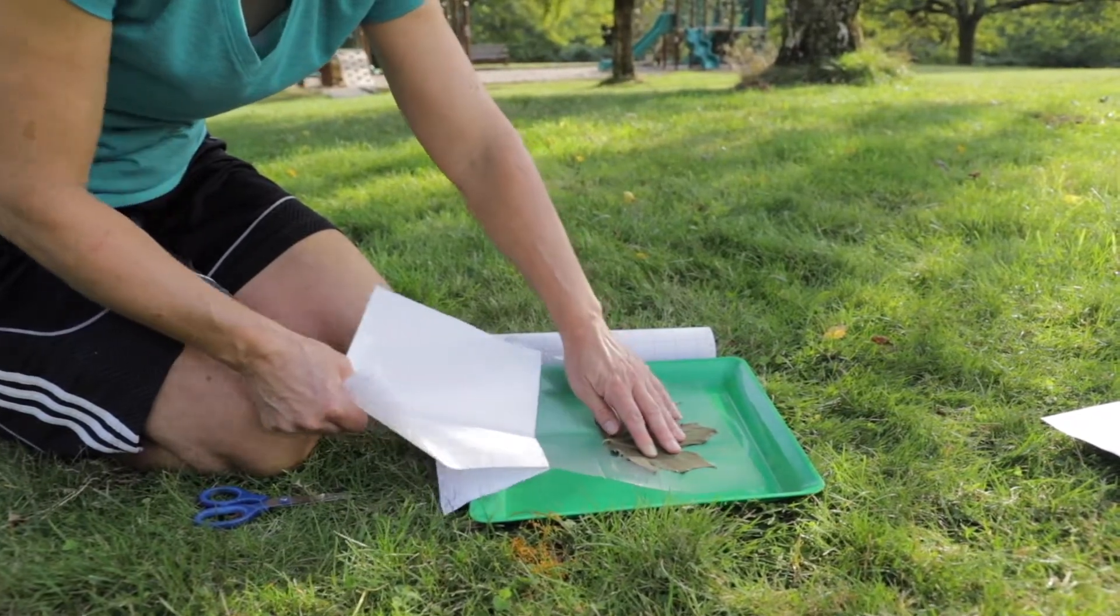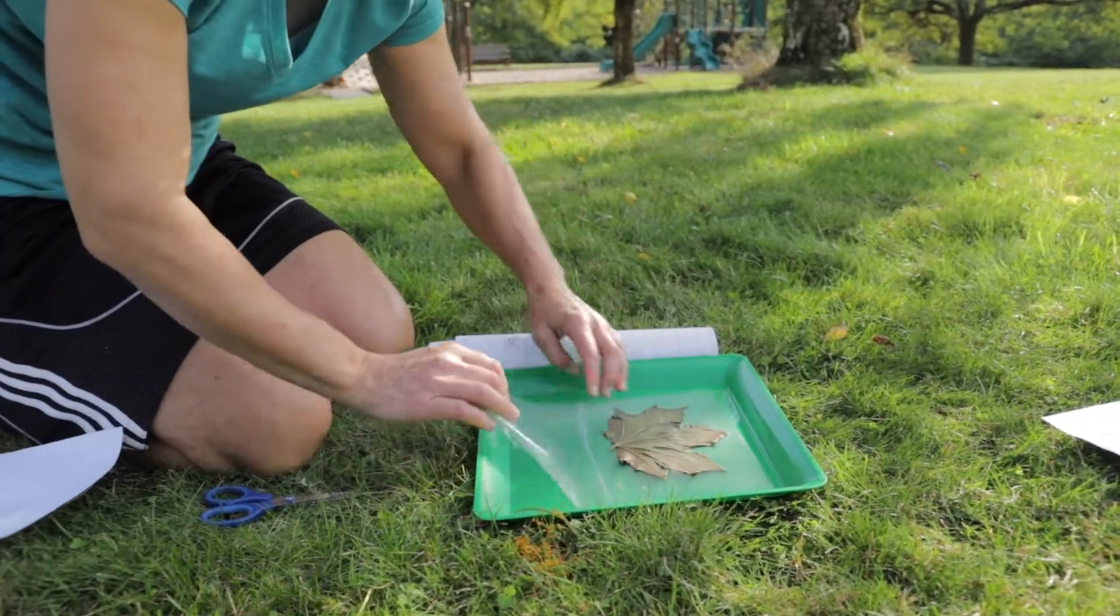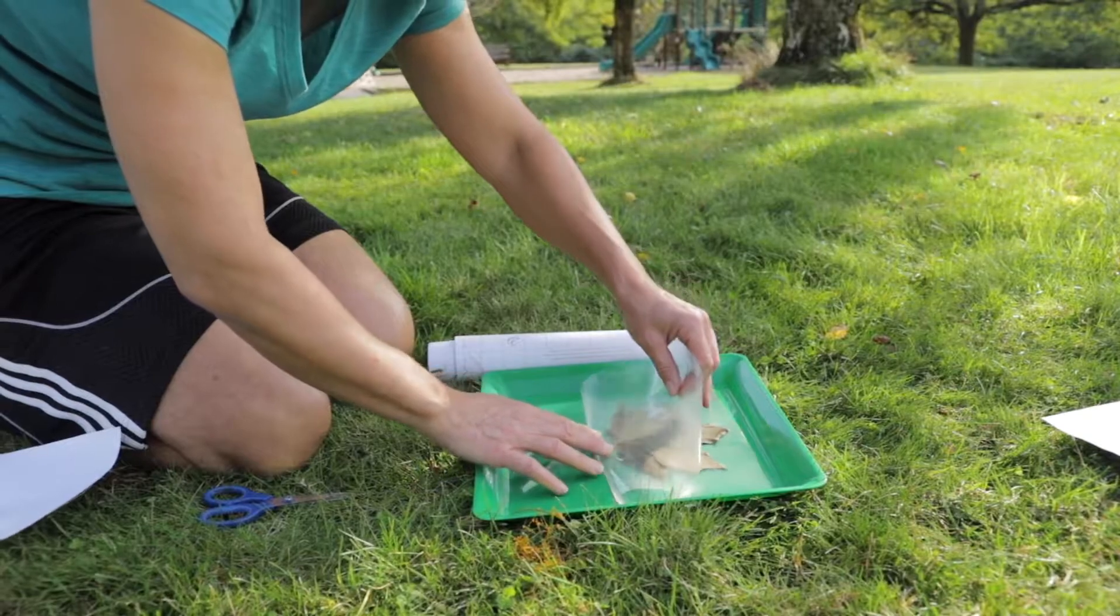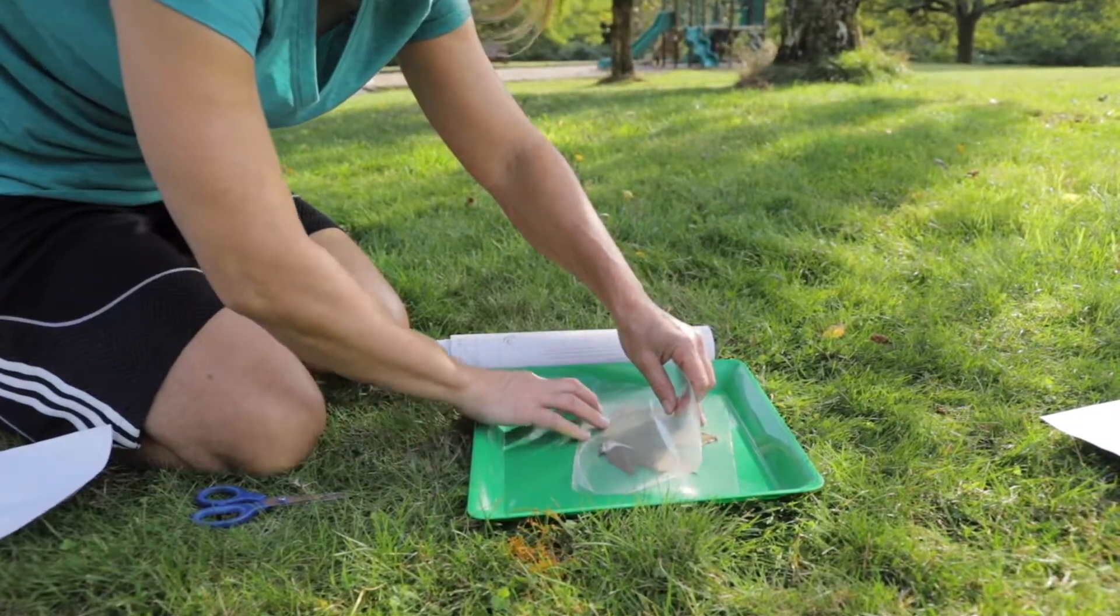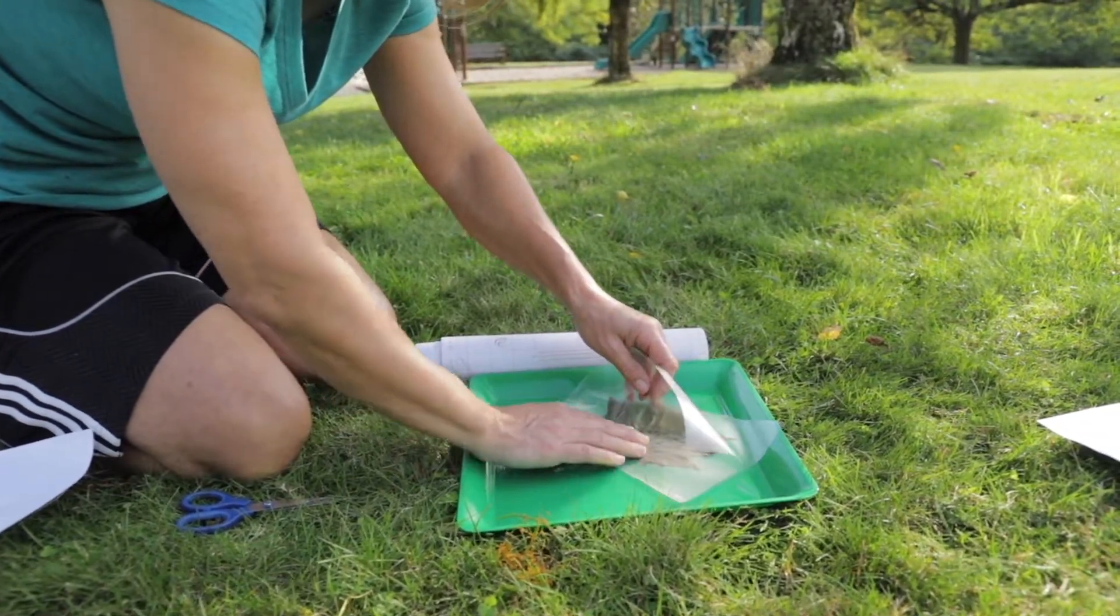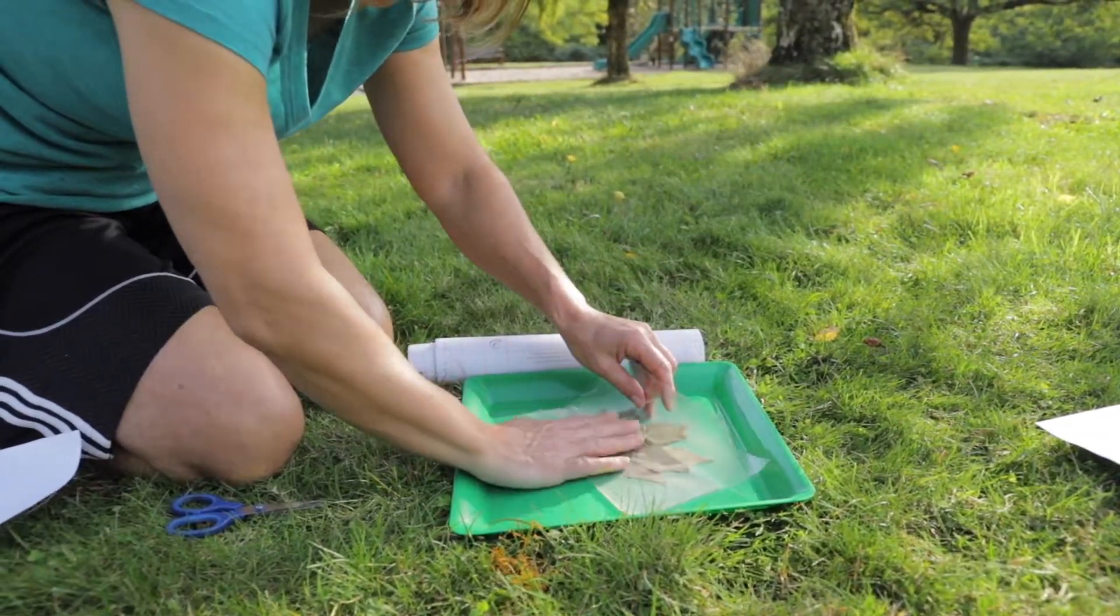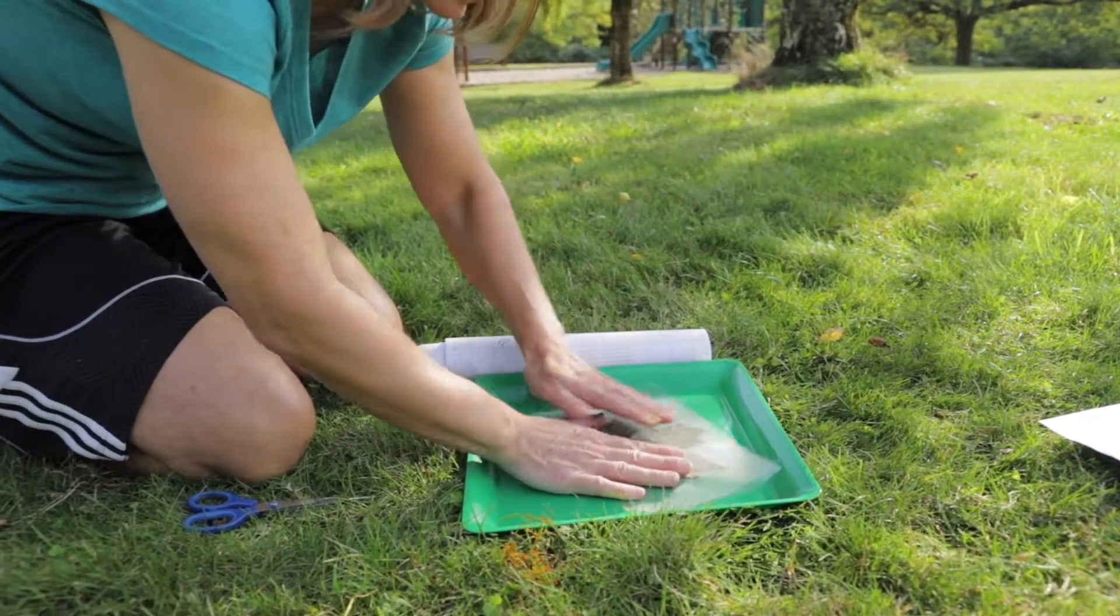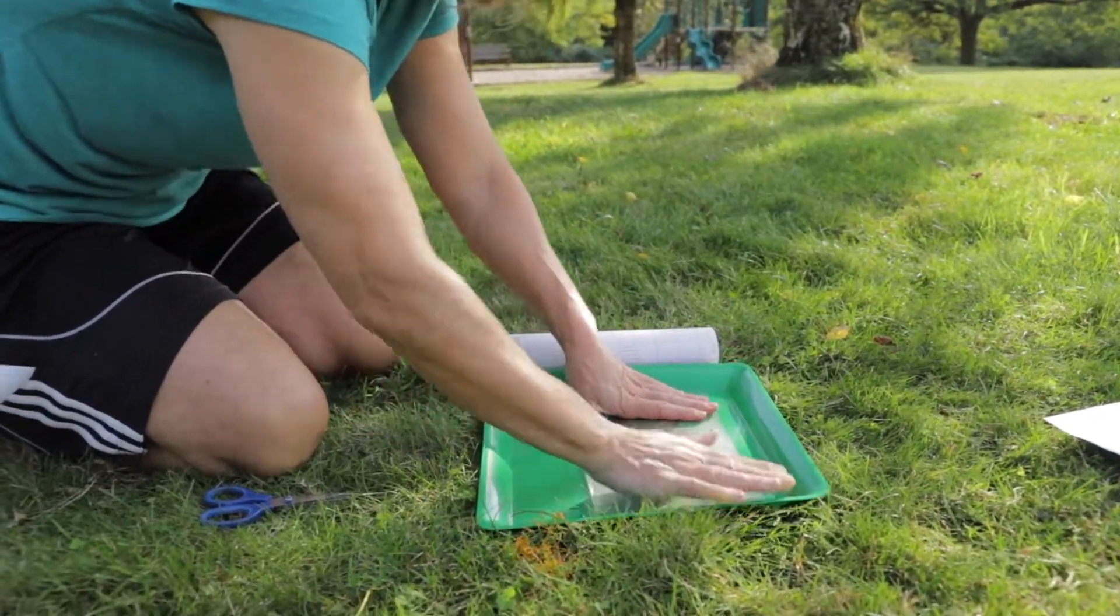Once you have it on there you can peel off the other half. And then you're going to carefully fold it where your crease was. And I work my way slowly to the end to try to decrease the amount of air bubbles.